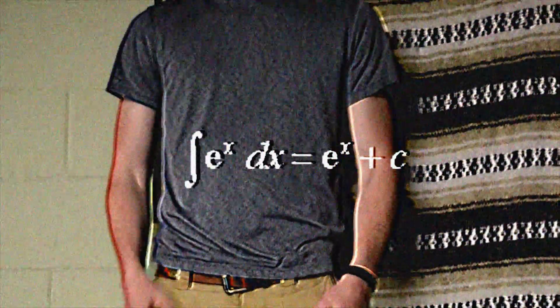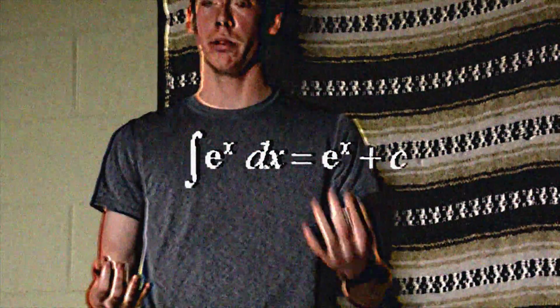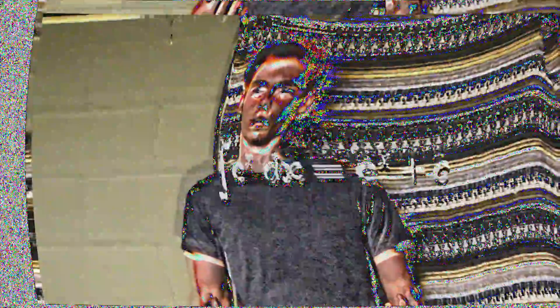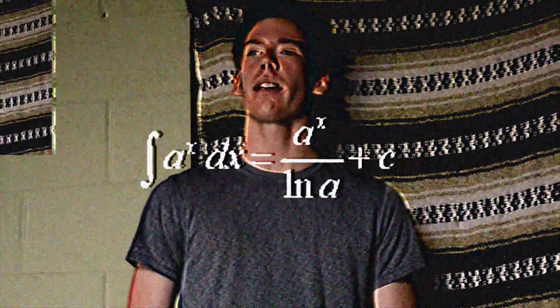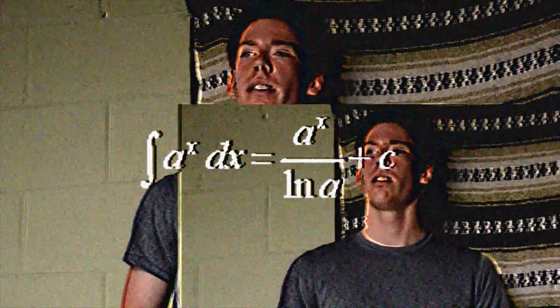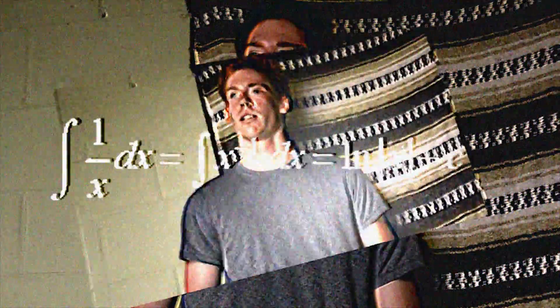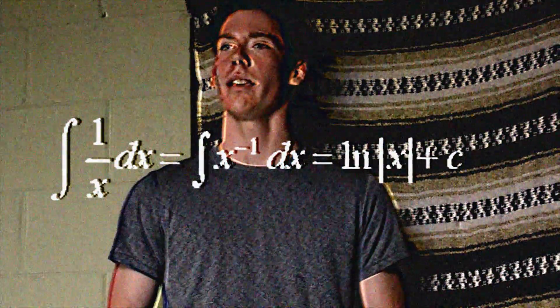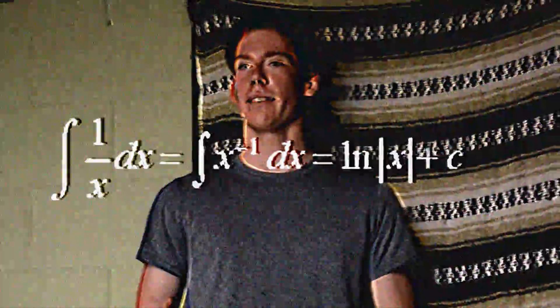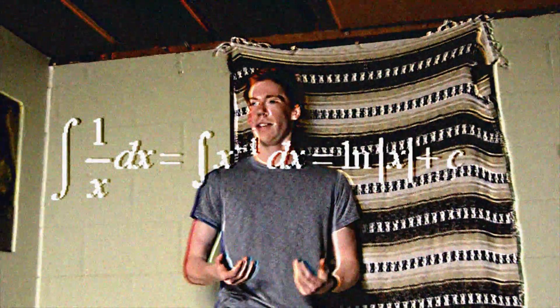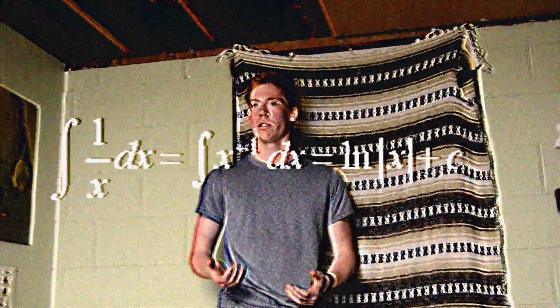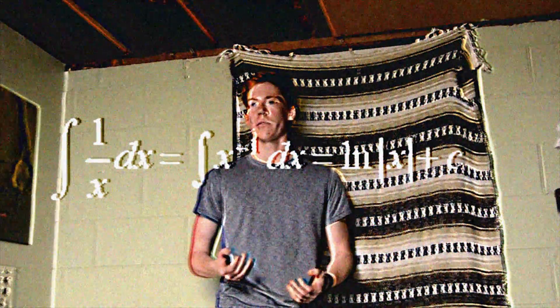Now let's take a glance at exponential and logarithmic functions. E to the x is the most basic integral, as it simply integrates to e to the x plus c. A to the x times dx integrates to x over ln of a plus c. And finally, 1 over x times dx is equal to x to the negative first dx, which is also equal to ln of the absolute value of x plus c.